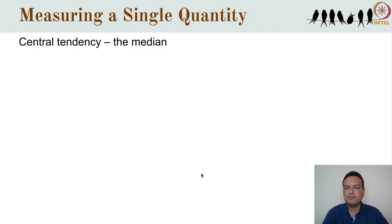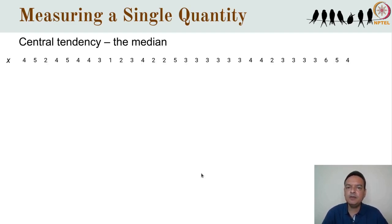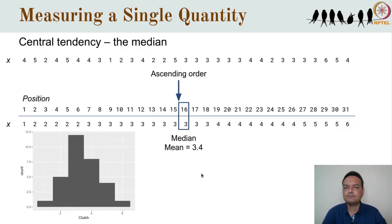Let's spend a little more time on the median, which is that number that divides the data set into two equal halves, with 50% of the values lying below and 50% above. Since we have a total sample size of 31 — an odd number — the median is the value in the 16th position. If the total sample size were an even number, the median would be the midpoint of the 15th and 16th numbers. In this relatively symmetrical distribution, the median of 3 and the mean of 3.4 are pretty close to each other.